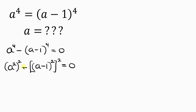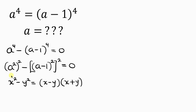Now notice that this is a difference of two squares. The difference of two squares says that x squared minus y squared can be expressed as x minus y times x plus y. Here x is the same as A squared, and y is the same as A minus 1 squared.